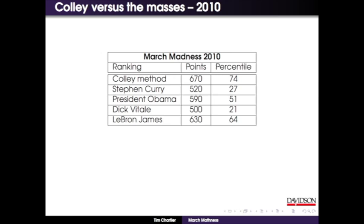The next year the Colley method did very well. President Obama got a good result for election purposes but not great for March Madness. Stephen Curry, the NBA star from Davidson - this is the year my students submitted. Everyone beat Stephen, so they were quite pleased - it was the only time we could beat Stephen on anything related to basketball. LeBron James also struggled. We did very well that year.